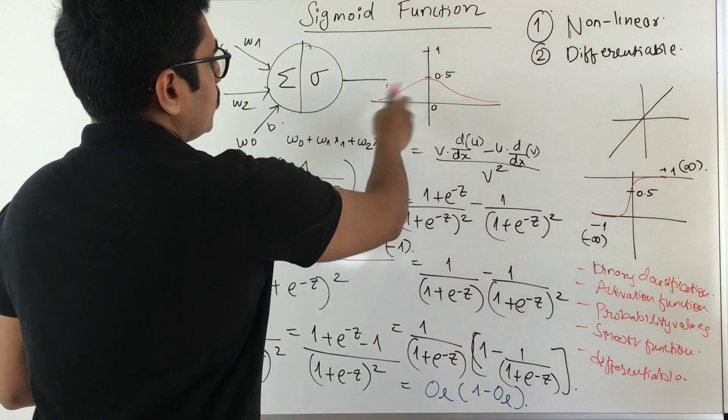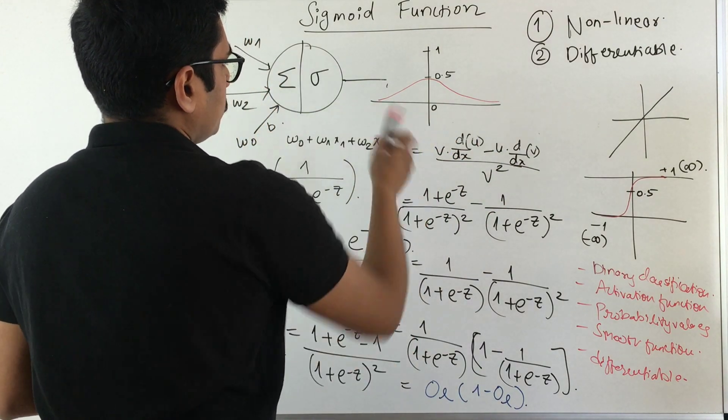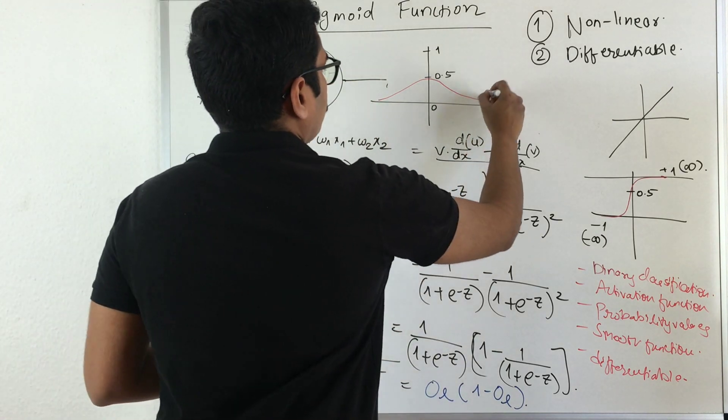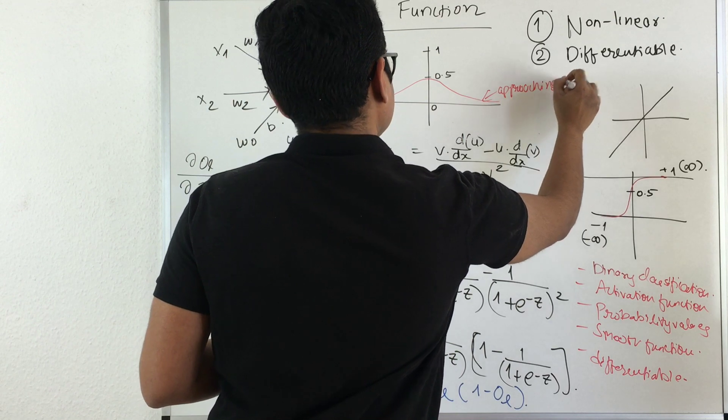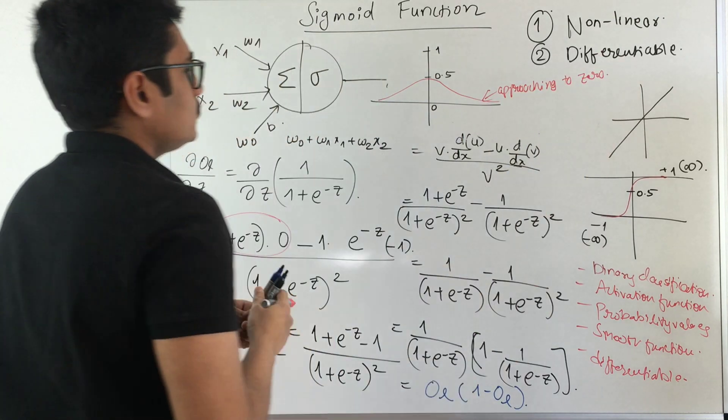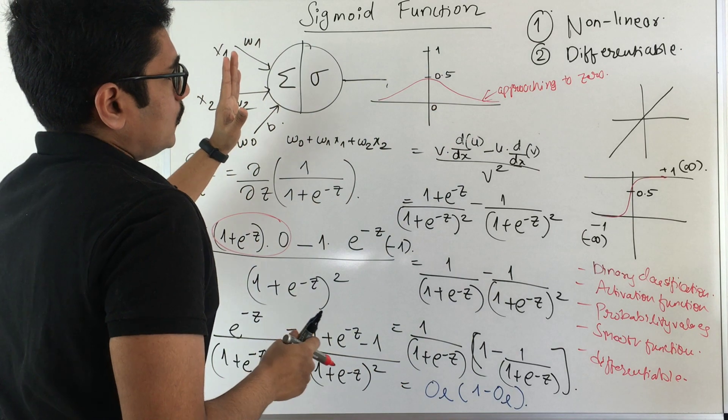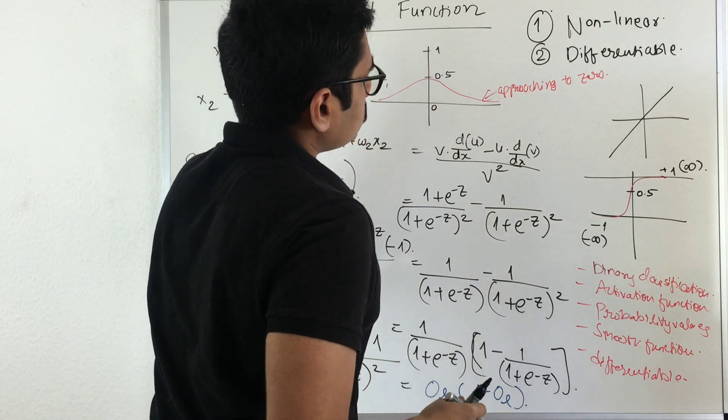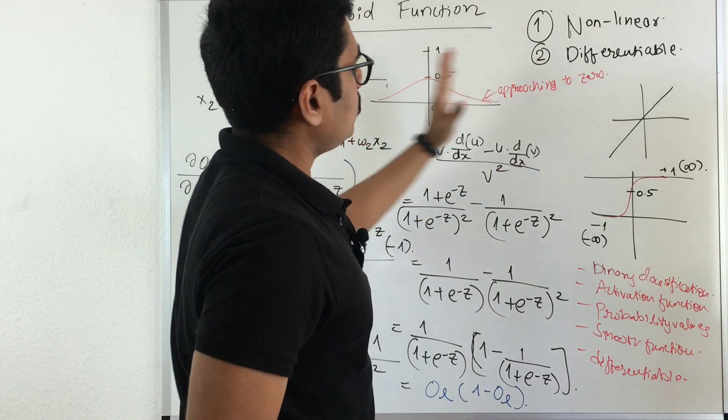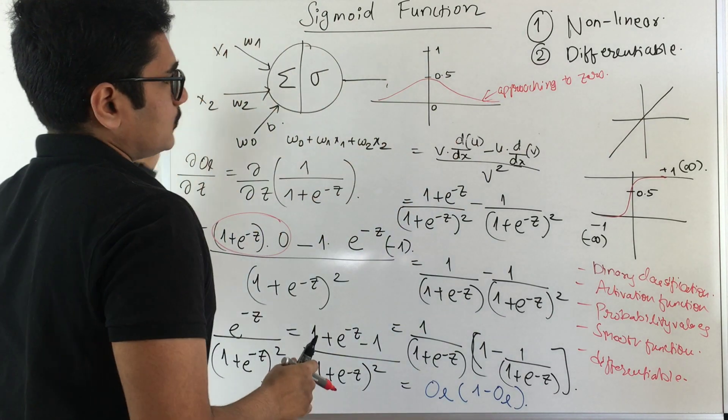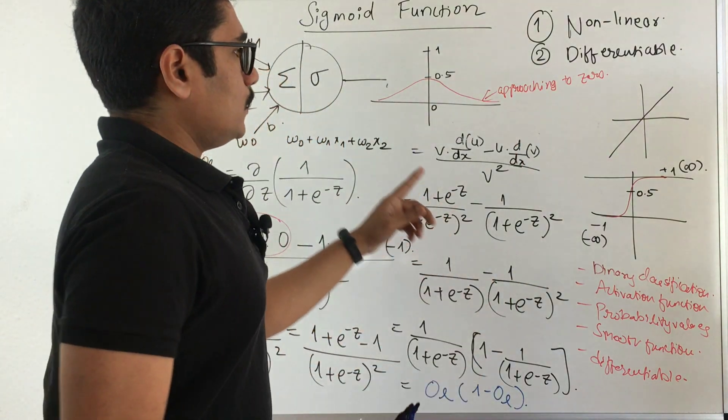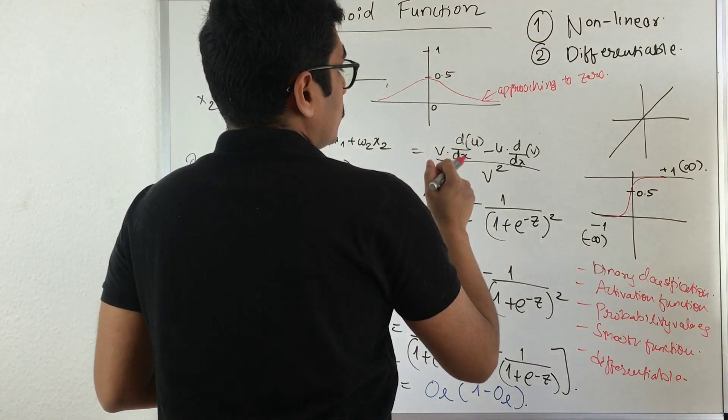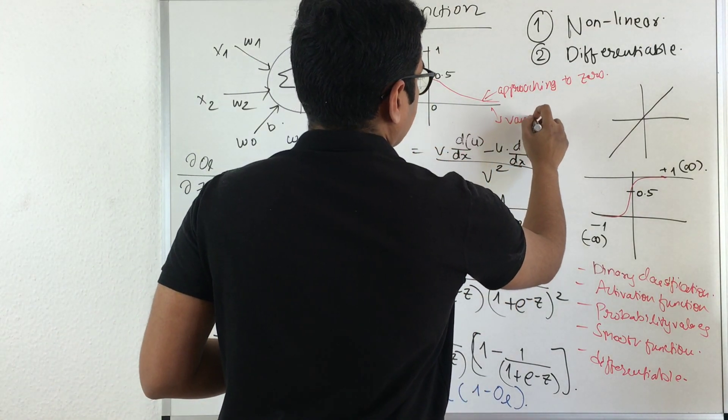If you look at the two extremities of this graph, these are approaching 0. If I expand this number line on both axes, at some particular point it will converge to 0. This is essentially a problem called vanishing gradient.